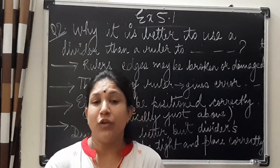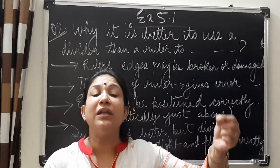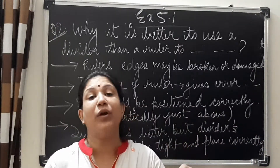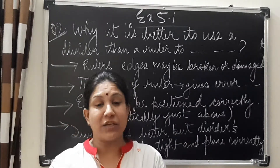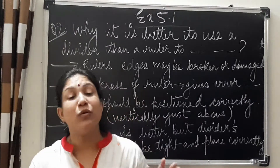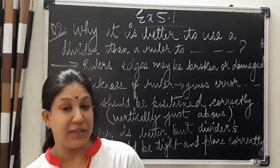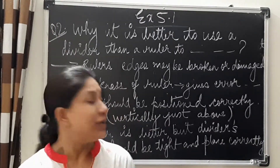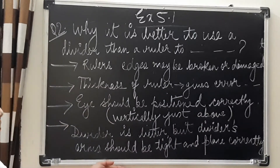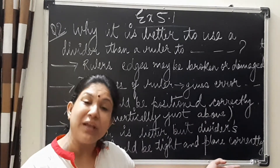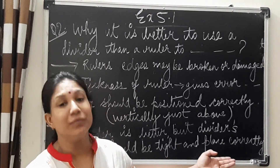Generally, we keep the tip on the starting point of the line segment and place the other at the end point — nobody goes wrong here. So the only thing to take care of is that the arms should be tight. That is the solution for your second question. You can read it from the board or copy it down.